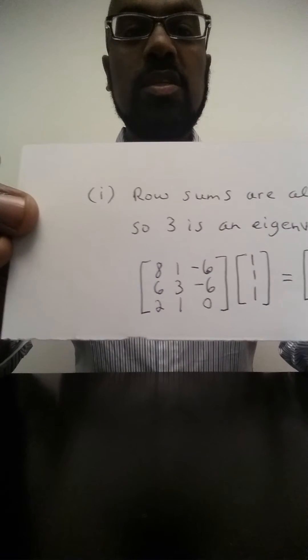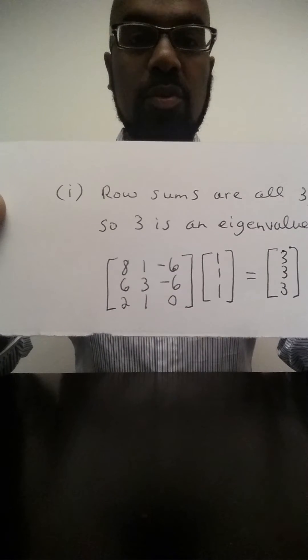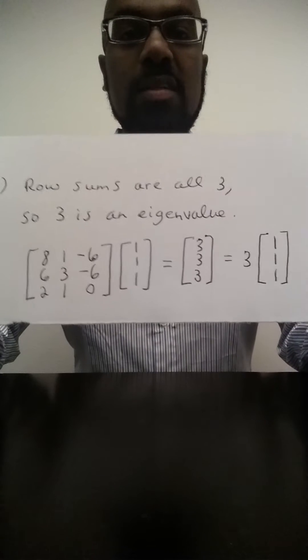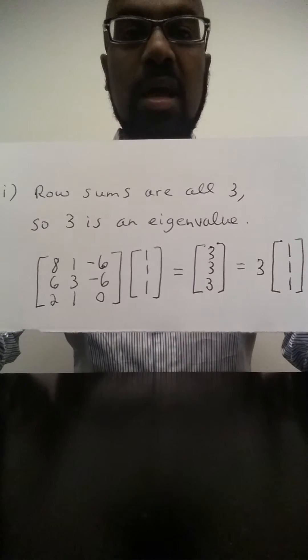And so the product of these two is the vector 3, 3, 3. And so 3 is an eigenvalue and in fact the all-ones vector is the corresponding eigenvector.